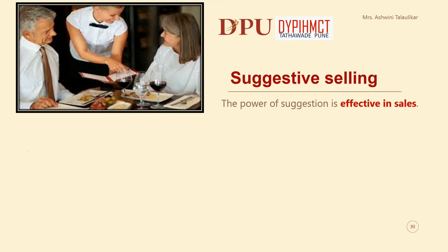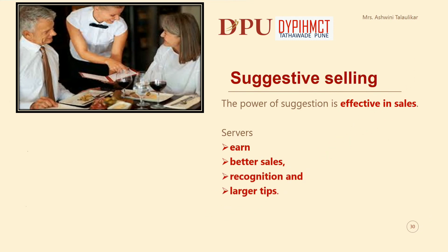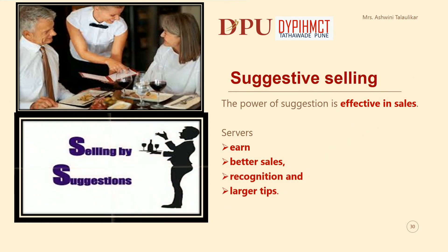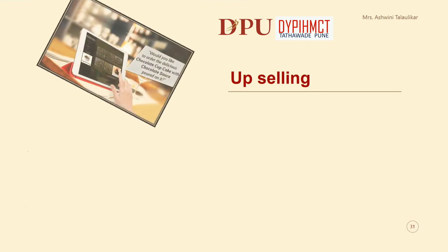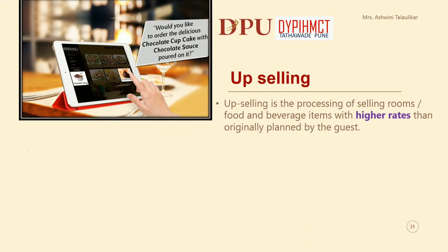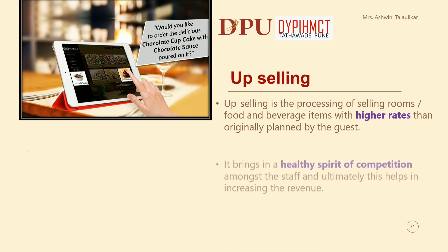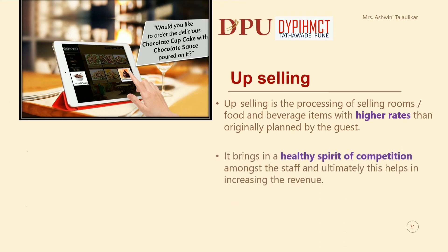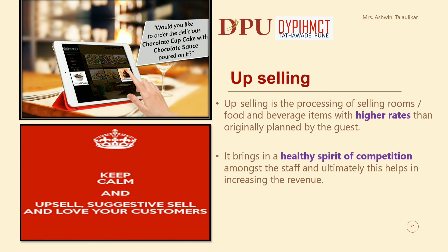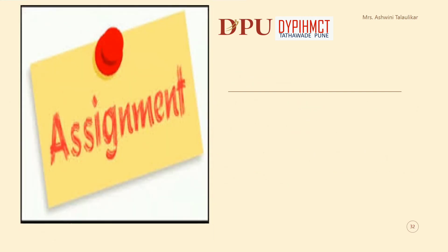We shall now understand the last topic in principles of menu merchandising: suggestive selling. The power of suggestion is effective in sales — servers achieve better sales recognition and larger tips through suggestive selling and upselling. Upselling is the process of selling rooms, food, and beverage items at higher rates than originally planned by the guest. It brings a healthy spirit of competition amongst the staff and ultimately helps in increasing revenue.